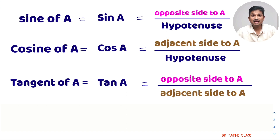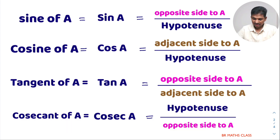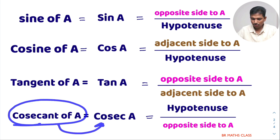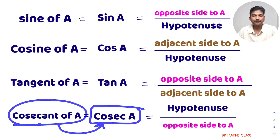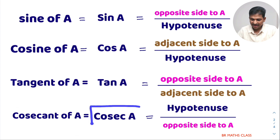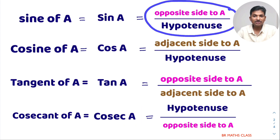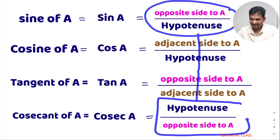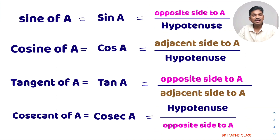If you are thorough in the first three trigonometric functions, the next three are very easy — they are the reciprocals of the first three. The fourth trigonometric function is cosecant of A, simply called cosec A. Cosecant A is defined as the reciprocal of sin A. Since sin A is opposite side by hypotenuse, cosecant A is defined as hypotenuse divided by opposite side.